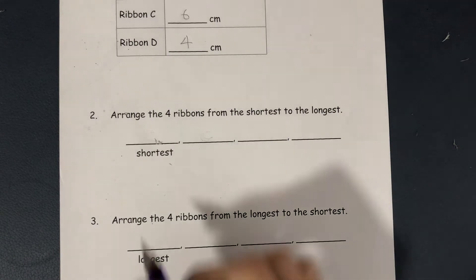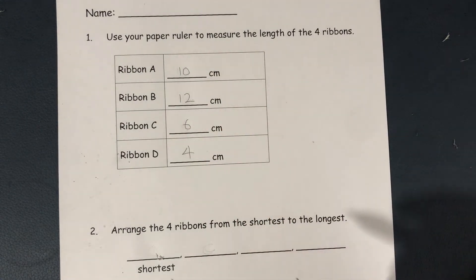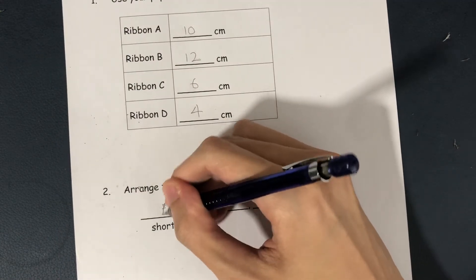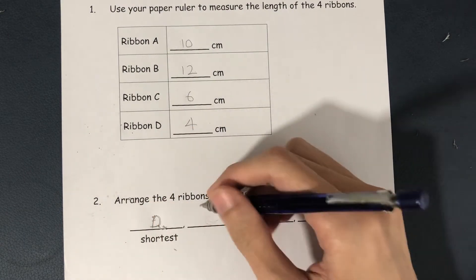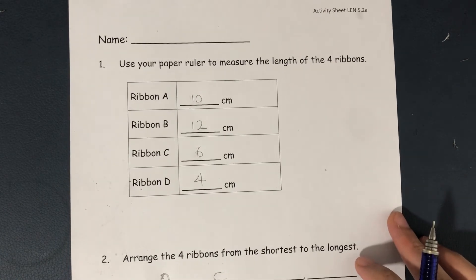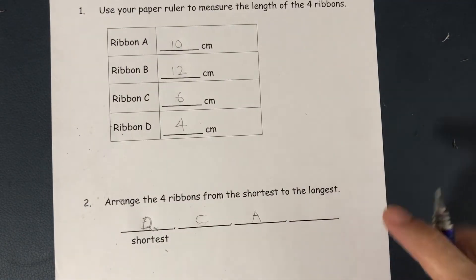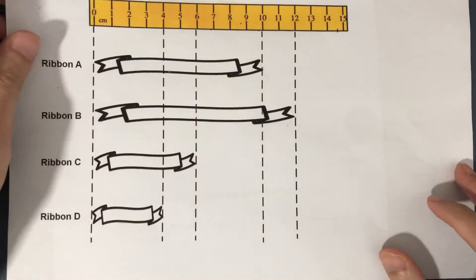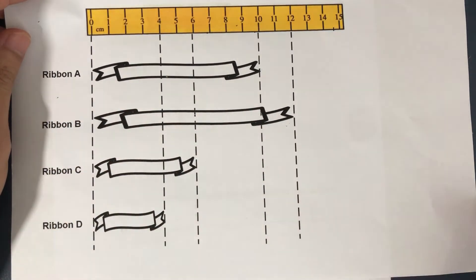Let's move on to the next question. We are asked to arrange the 4 ribbons from the shortest to the longest. Which is the shortest ribbon? It is Ribbon D — because it's the smallest number, 4 cm. Next shortest is Ribbon C at 6 cm. After that comes Ribbon A at 10 cm. Which makes Ribbon B the longest. So the order is: Ribbon D, Ribbon C, Ribbon A, and Ribbon B.